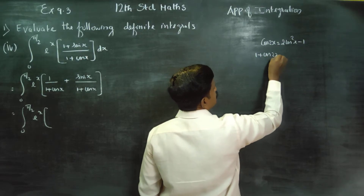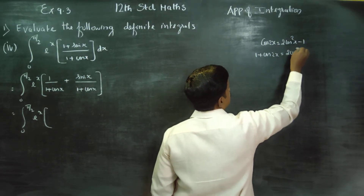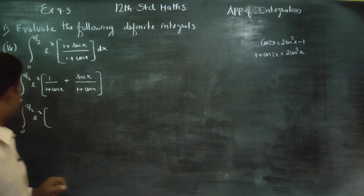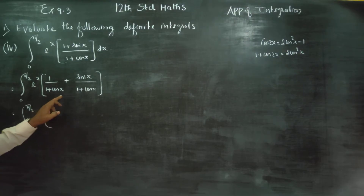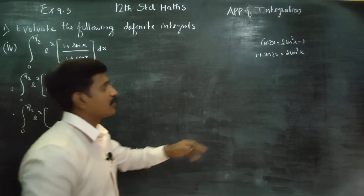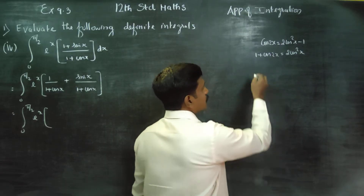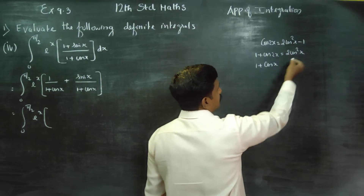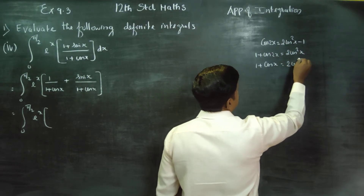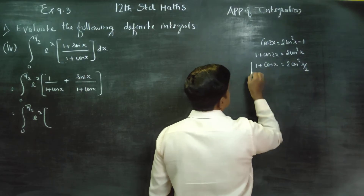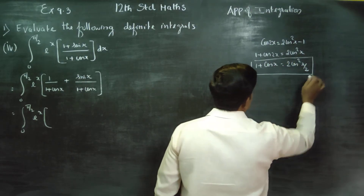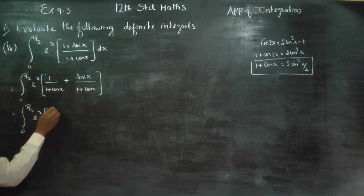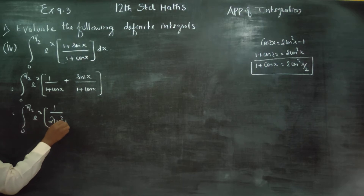Therefore, 1 + cos 2x is equal to 2cos²x. Replacing 2x with x, 1 + cosx equals 2cos²(x/2). This is purely from 11th standard trigonometry — we are recalling that 1 + cosx = 2cos²(x/2).